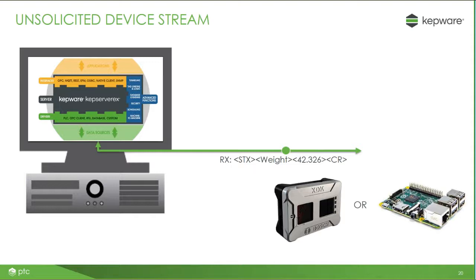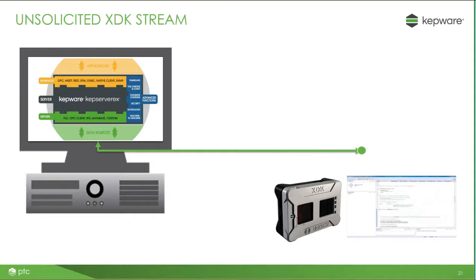Another way to interact with a device is to configure it to send an unsolicited message on a certain interval. In the example here, a message is streaming to KepServer on an interval of two seconds. Within that message you have a start-of-message ASCII character, followed by a weight command, and then the weight value. KepServer is just sitting back, opening up a UDP port to listen for that message. In fact, that's exactly what we're going to demonstrate today — we are working with a Bosch XDK device, which is going to stream a UDP message to KepServer. That message is totally configurable by the user, so you have control to program the message being sent, and also to program KepServer to understand that message.